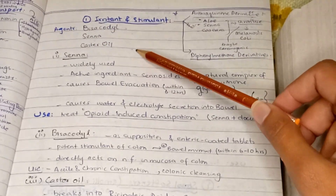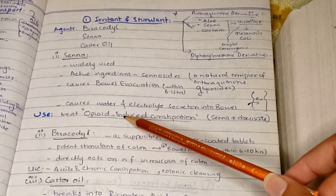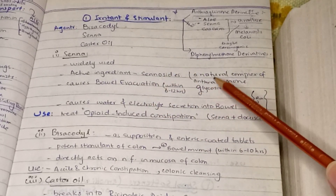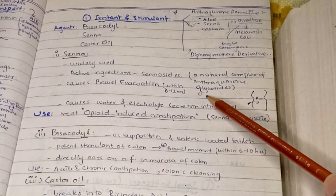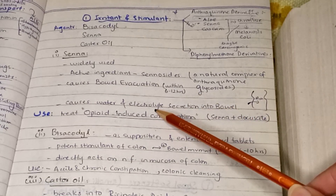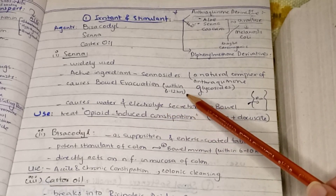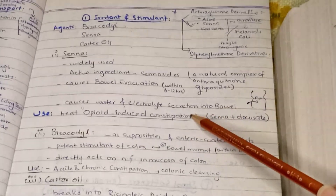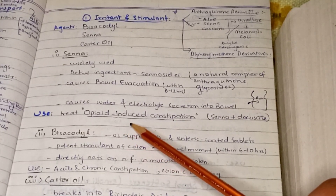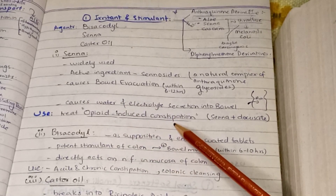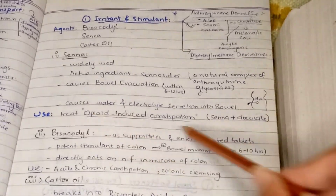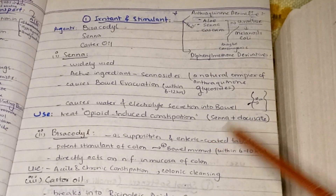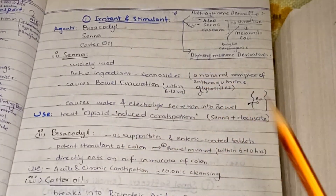Senna is widely used and its active ingredient is sennosides, which is a natural complex of anthraquinone glycosides. It causes bowel evacuation within just 6 to 12 hours and also causes water and electrolyte secretion into the bowel. The uses of senna include treatment of opioid-induced constipation, for which senna and docusate are both used in combination.